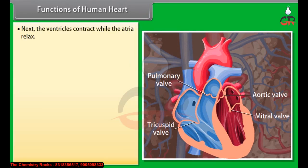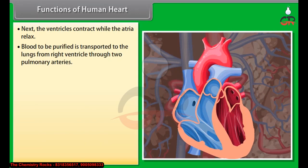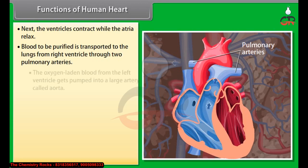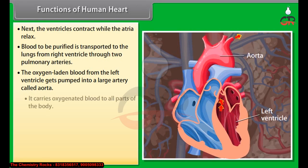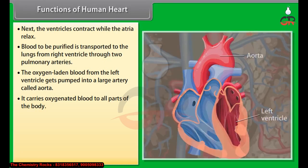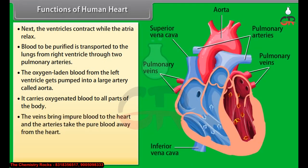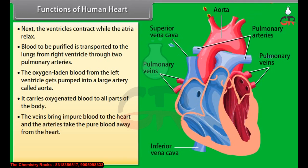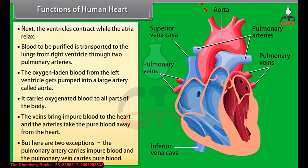The ventricles contract while the atria relax. Blood to be purified is transported to the lungs from the right ventricle through the two pulmonary arteries. The oxygen-laden blood from the left ventricle gets pumped into a large artery called the aorta, which carries oxygenated blood to all parts of the body. There are two exceptions: the pulmonary artery carries impure blood and the pulmonary vein carries pure blood.